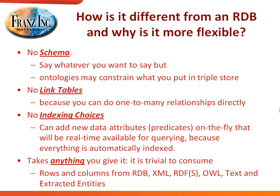I always have to say something about the difference between them. A graph database or triple store doesn't have any schema — mostly you can just say what you want to say. There are no link tables because you can do one-to-many relationships directly. There are no indexing choices because most graph databases and all triple stores index every predicate on the fly. So if you say person one likes pizza and you never talked about likes before, the next millisecond you can ask for all people that like pizza.